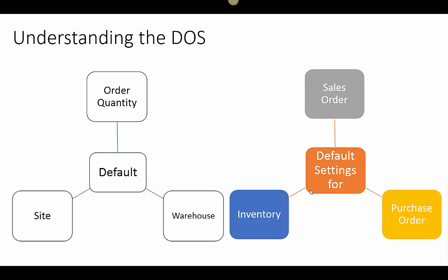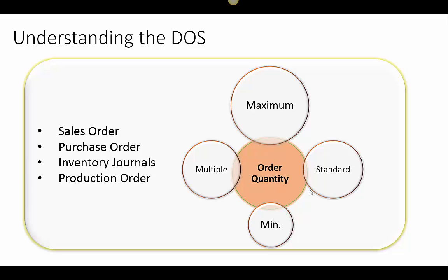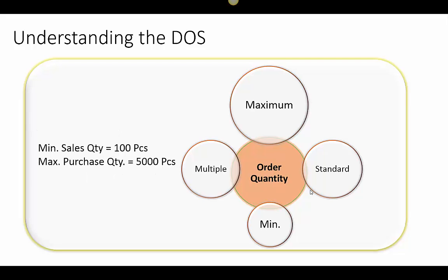Default order settings are always set up per product. Users can set up maximum order quantity, minimum order quantity, standard order quantity, and order quantity multiple for sales, purchase, production orders and inventory journals. This can be set up for a particular site-warehouse combination or it can be set up independent of site. For example, we do not accept a sales order less than 100 pieces of bicycle because that is not cost effective due to transportation cost, or we may not accept a purchase order more than 5000 pieces at a time because our warehouse does not have capacity to hold that much inventory.